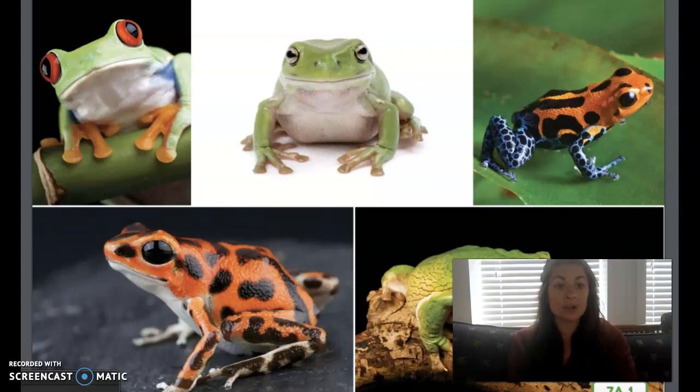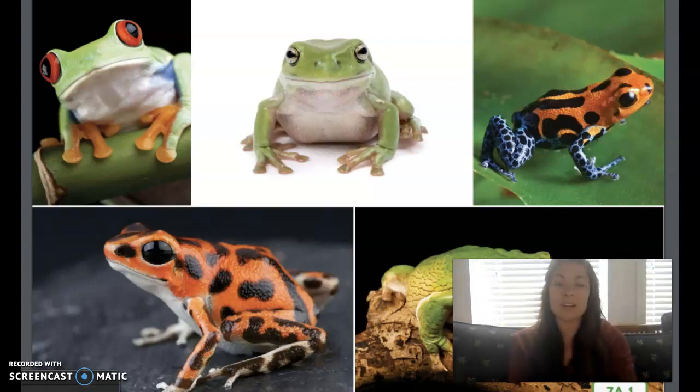Frogs live on every continent in the world except Antarctica. Why do you think that is? Frogs don't live in Antarctica because it's too cold, although there is a frog that lives just inside the Arctic Circle. Do you know what a group of frogs is called? A group of frogs is called an army. Now that you know some cool facts about frogs, let's find out about their life cycles.